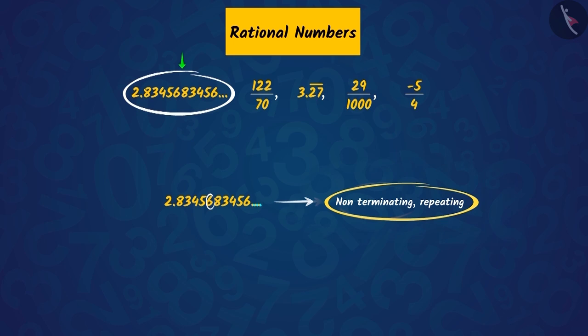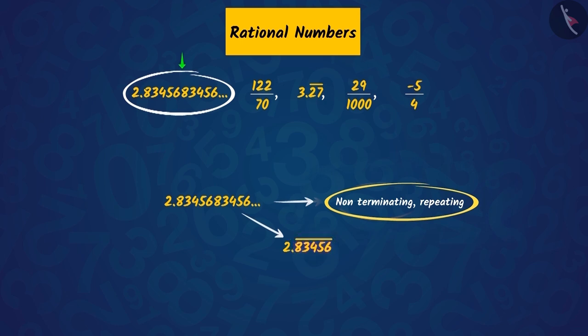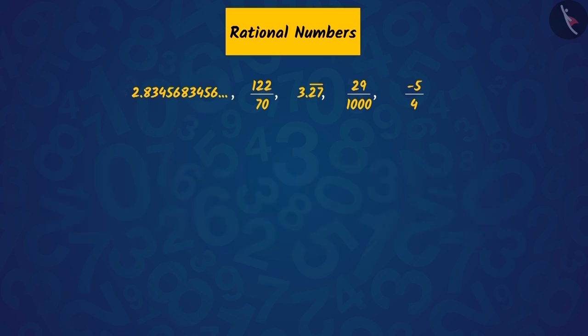So, the decimal expansion of this real number will be non-terminating, repeating. We can also write this number in this way by putting a bar. What do you understand by this bar above the digits? This bar above the digits represents the group of digits that are recurring. Like in this number, the digits 2 and 7 are recurring.